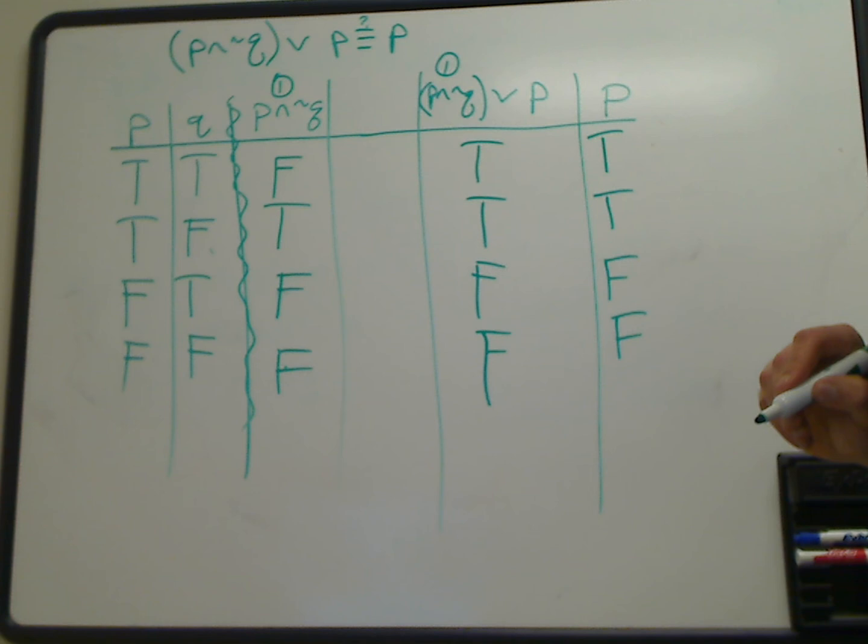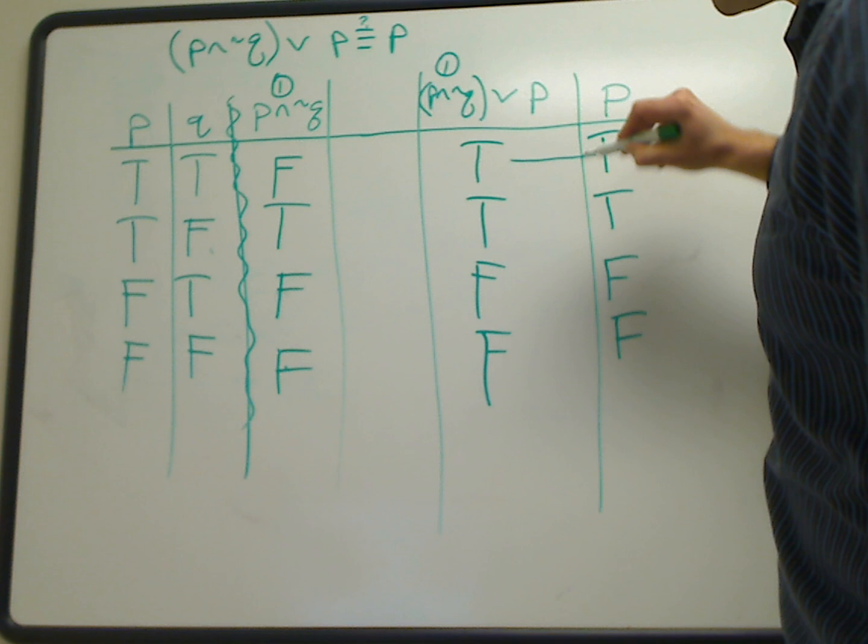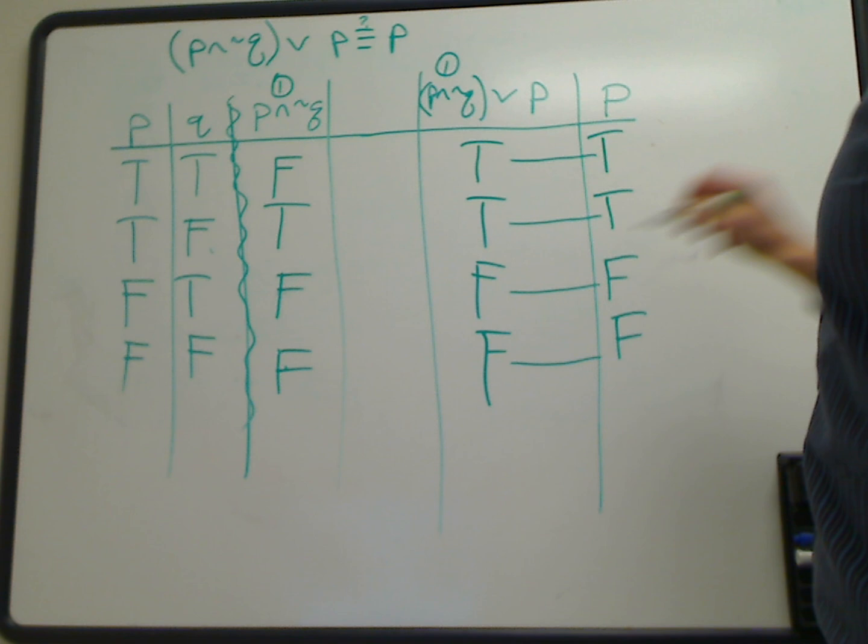And now we've shown that the statement on the left is logically equivalent to the statement on the right because every element of our truth table, every single row matches. For it to be logically equivalent, every row has to match for your entire statement.